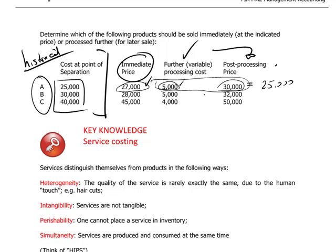The same logic occurs for product B. We can sell immediately for $28,000. Would we do better if we were to spend $5,000 and get $32,000? The net cost here, $32,000 minus $5,000, is equal to $27,000, which is less than $28,000, which would be the proceeds from an immediate sale. So it seems that, again, immediate sale would be beneficial.